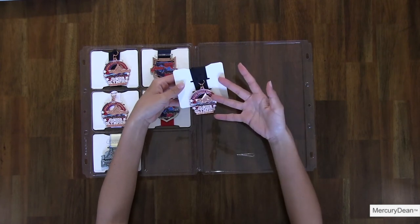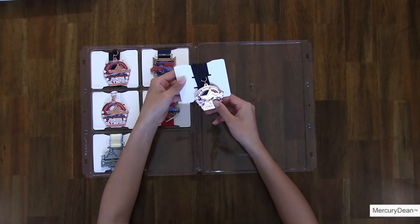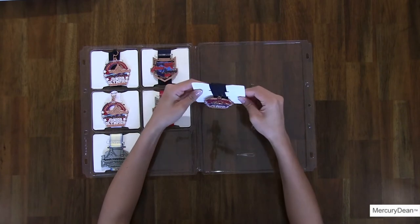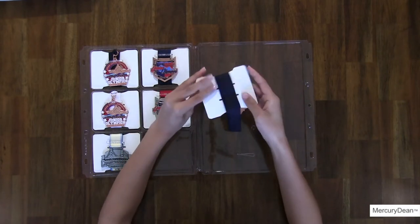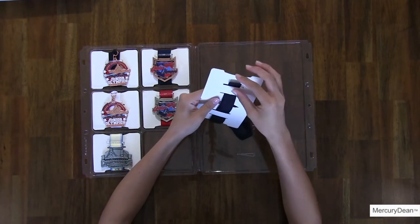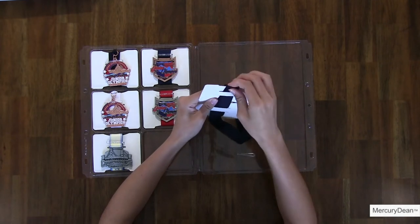As you can see here, the medallion lands way past the center of the cavity insert. This is how you adjust. Unwrap, adjust length, and rewrap.